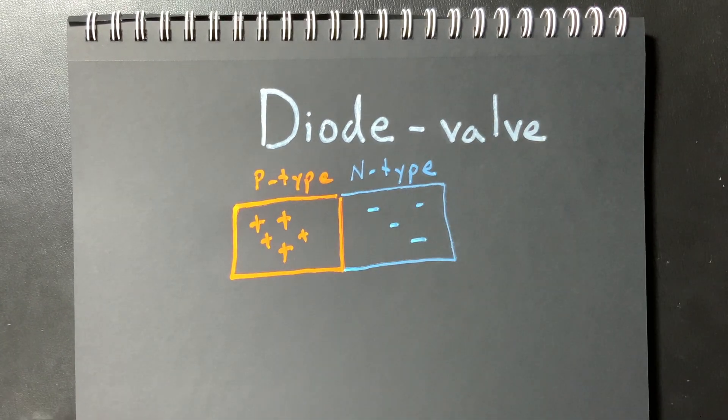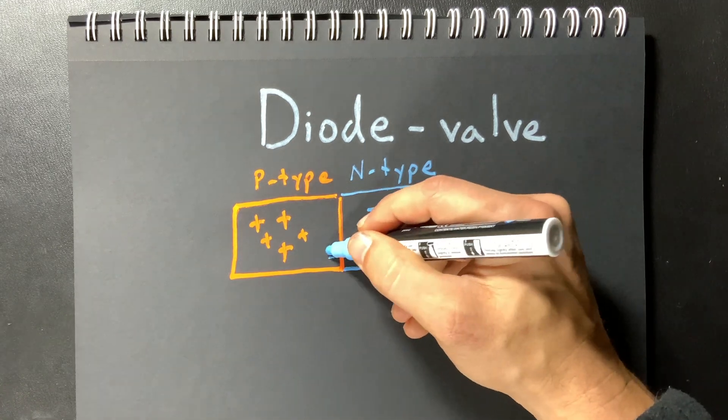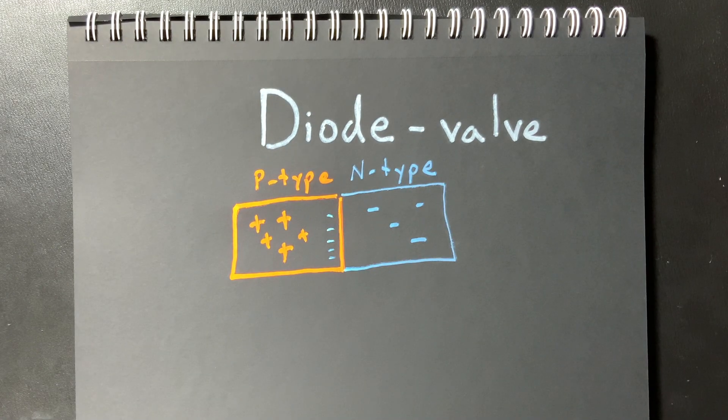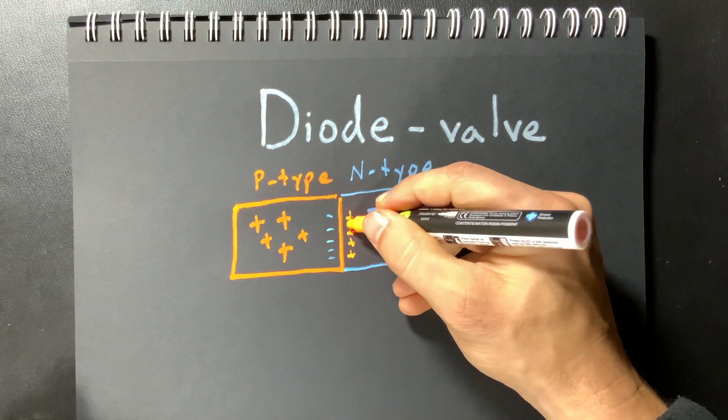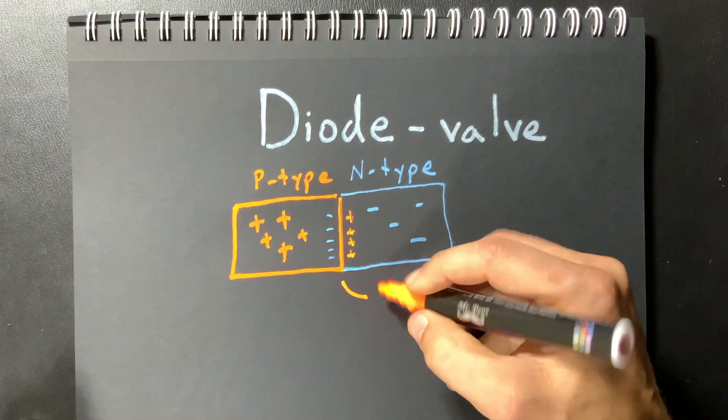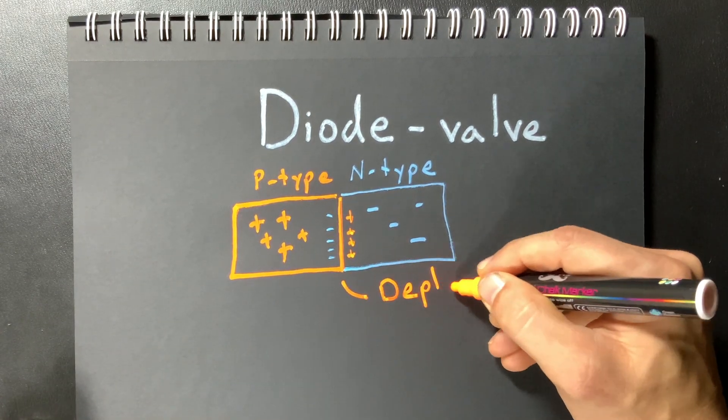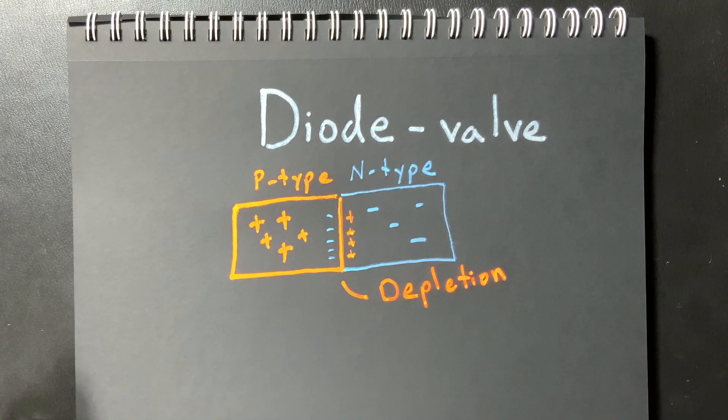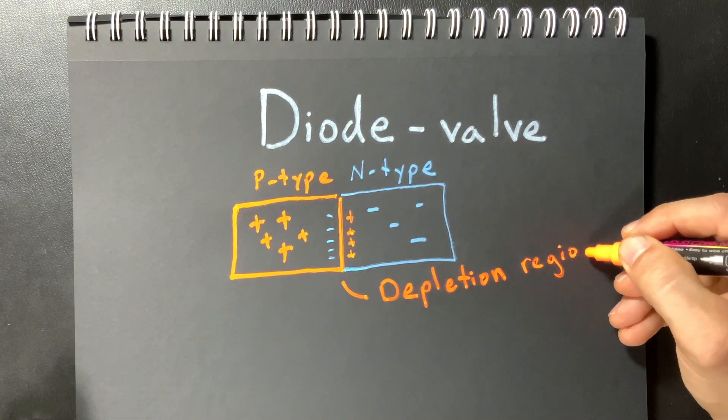Okay cool. So in the middle we have this thing where we have charges coming together and in fact those charges combine and so there's not very many charge carriers and so we call this a depletion region. So it's kind of hard for electricity flow in this depletion region.